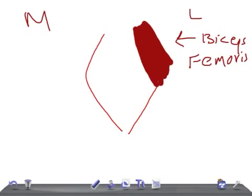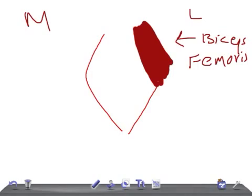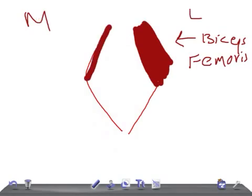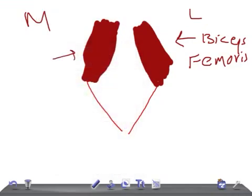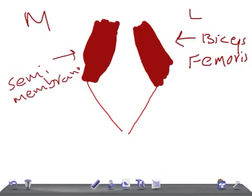Now for the biceps femoris on the lateral side, on the medial side we have two muscles - the semimembranosus and semitendinosus. These two muscles bound the popliteal fossa superiorly and medially. So we have semimembranosus and semitendinosus forming the superomedial boundary.